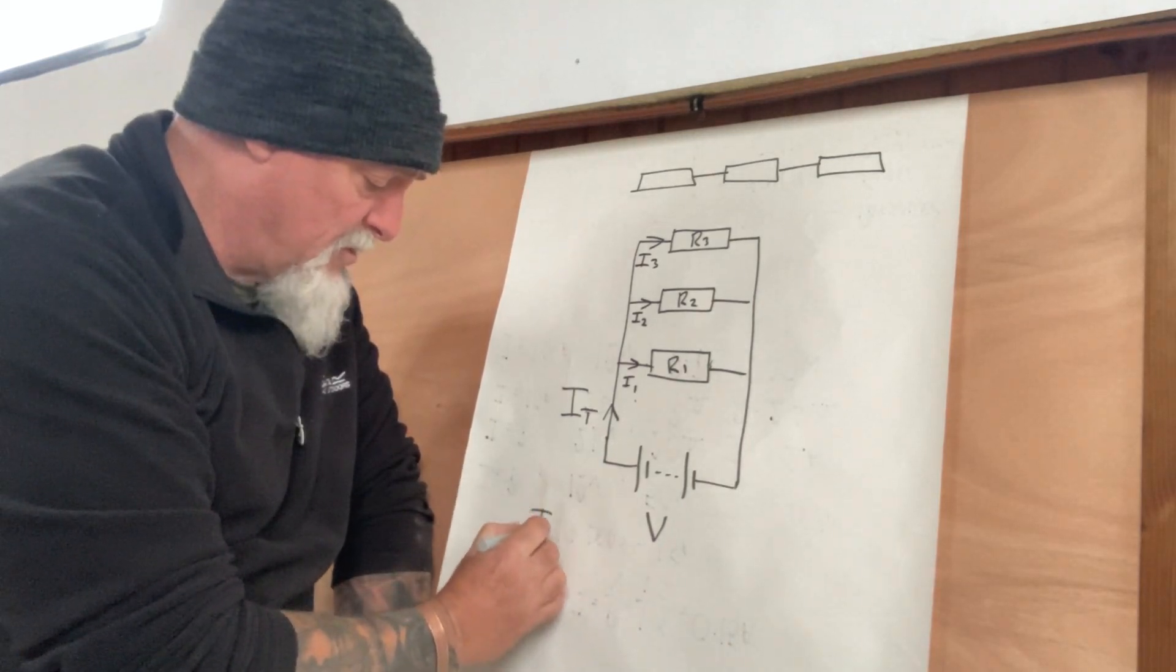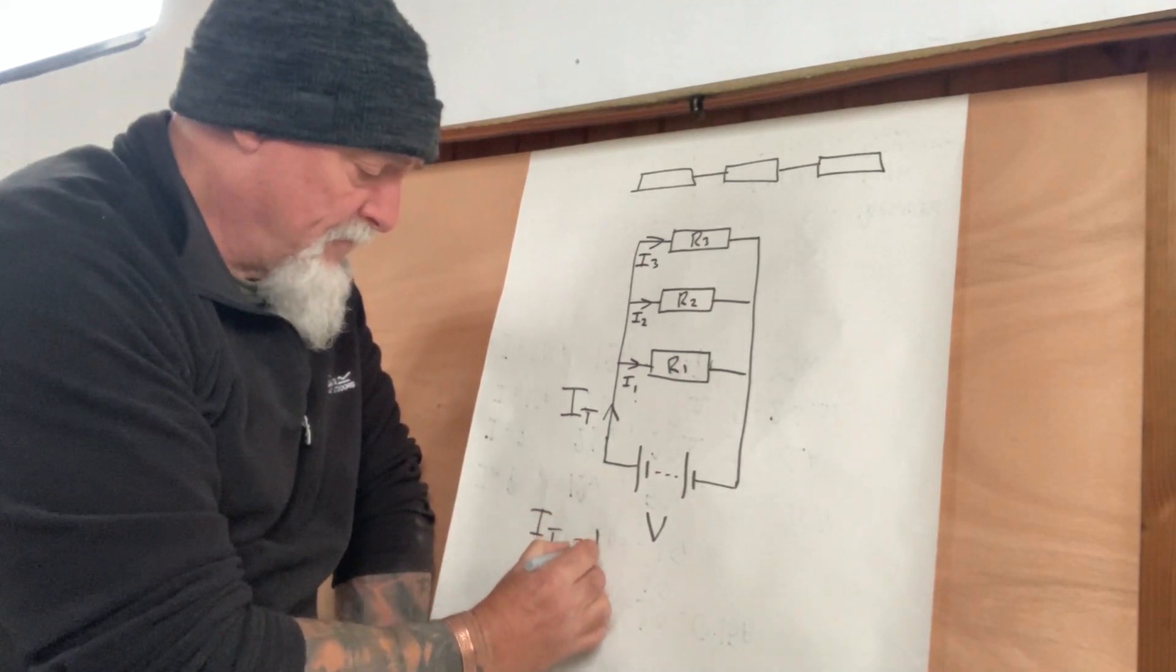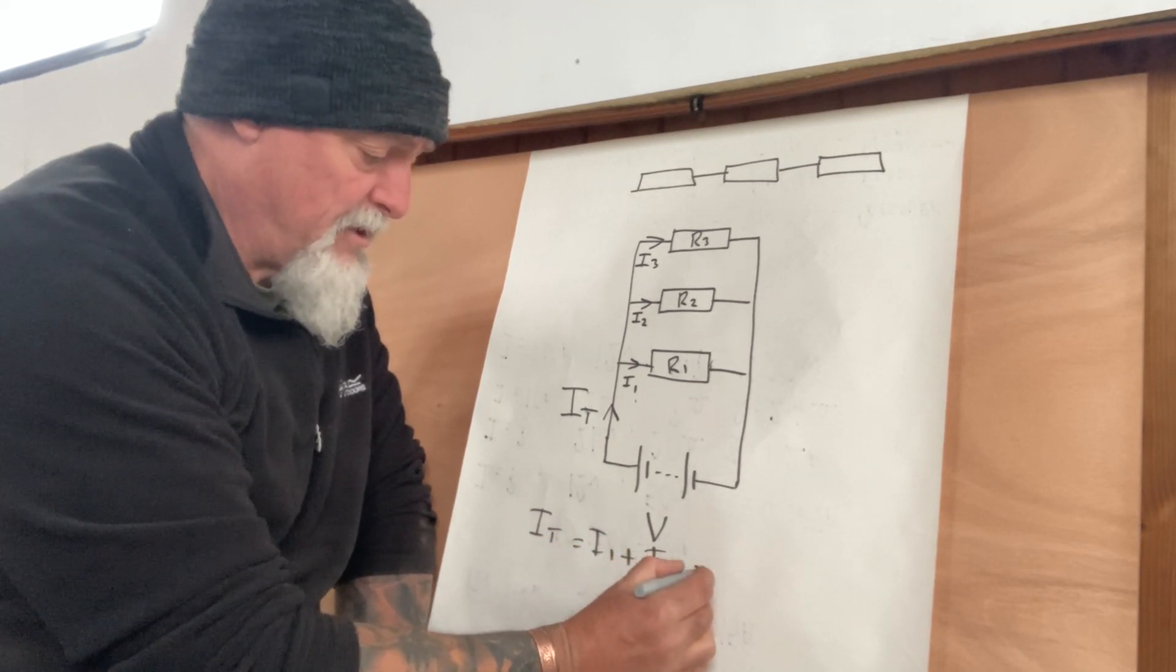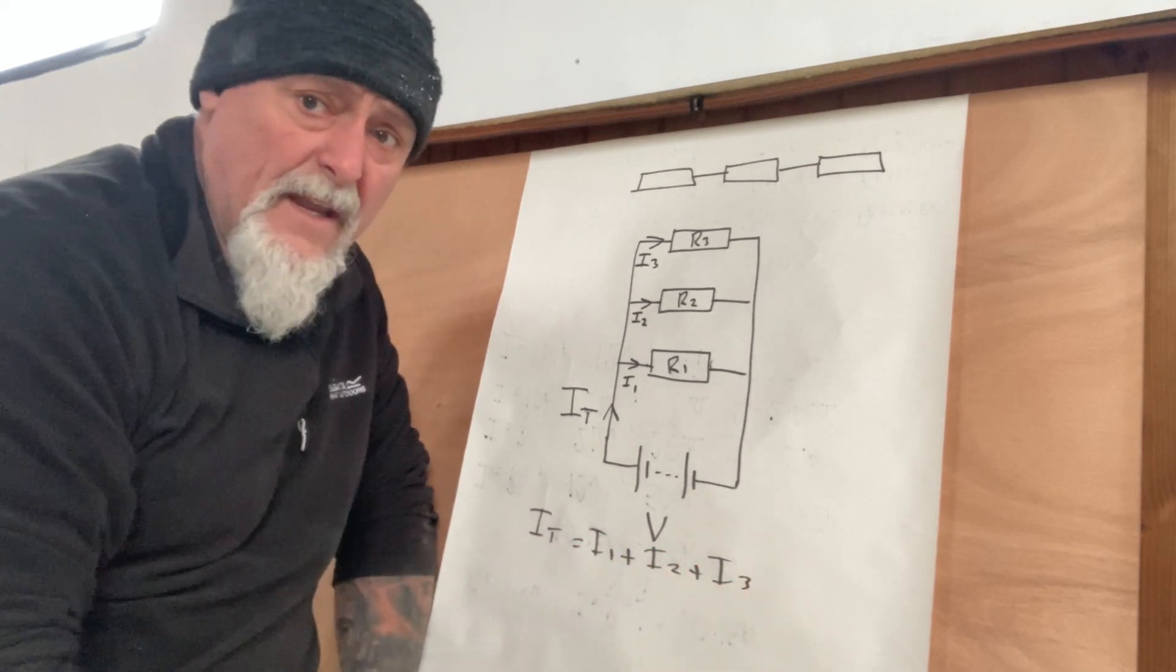Which will equal the total. So total current is just I1 plus I2 plus I3. It's as simple as that.